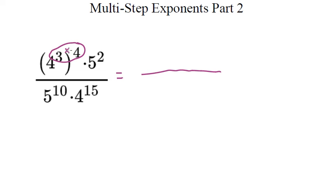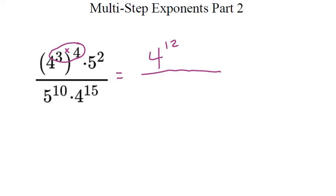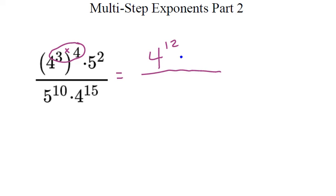The first thing I want to do is evaluate that power-to-a-power. So that makes the numerator 4 to the power of 3 times 4, which makes that 4 to the power of 12. Then I'm also going to take my second term, which is 5 squared. So I'm going to have 4 to the power of 12 times 5 squared. In the denominator, there's nothing I can do to simplify yet, so I'm just going to put my 5 underneath — 5 to the 10th.